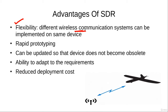The second advantage is rapid prototyping. Using the same generic hardware, we can implement new wireless communication systems very quickly by just changing the software.